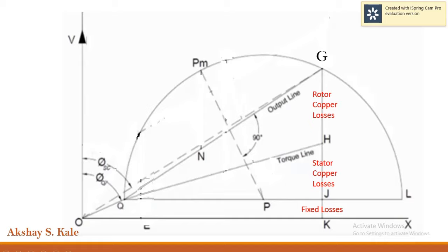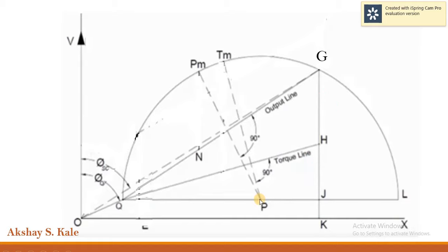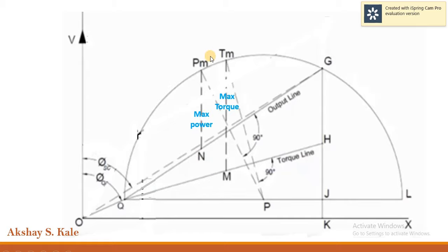From point P, draw a line perpendicular to the torque line and extend it until it intersects the semicircle at point TM. You now have three points on the semicircle: PM, TM, and G. Draw a perpendicular line to the reference line from PM up to the output line — the line between N and PM gives you the maximum power line. Similarly, draw a perpendicular line to the reference line from TM up to the torque line — the line between M and TM is your maximum torque line.